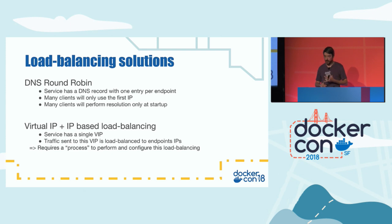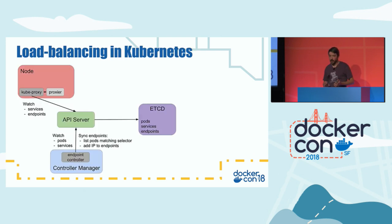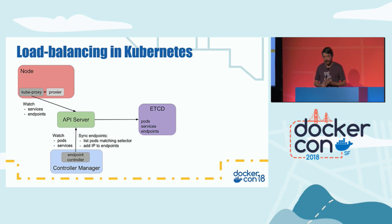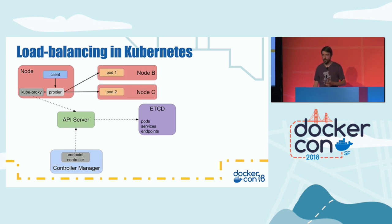That's why both Kubernetes and Swarm decided to use virtual IPs for load balancing. A service always has the same virtual IP, and another process is responsible for doing the actual load balancing. In the Kubernetes world, this is done with kube-proxy, which runs on all nodes, watches the API server for service and endpoint information, and updates a proxier that is responsible for load balancing traffic to all the pods providing the service.